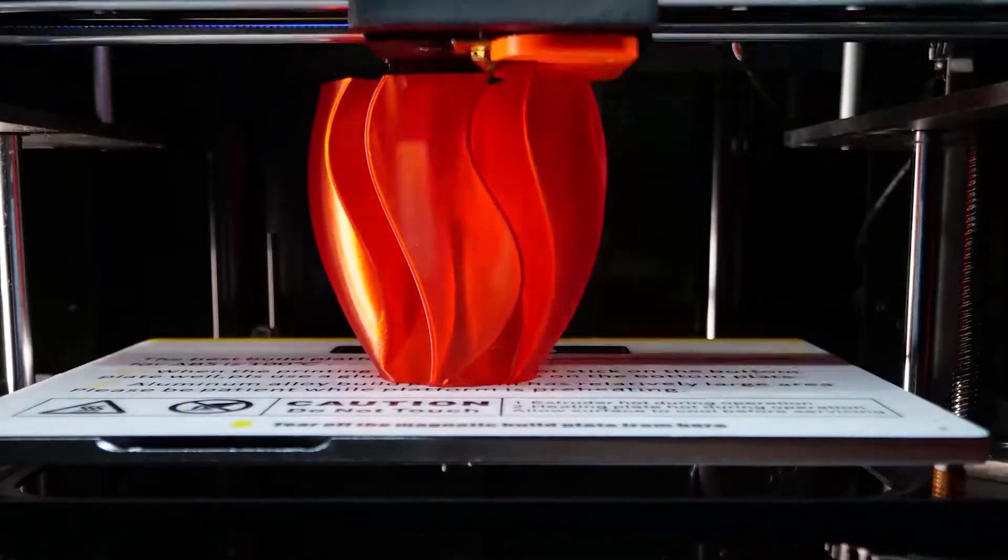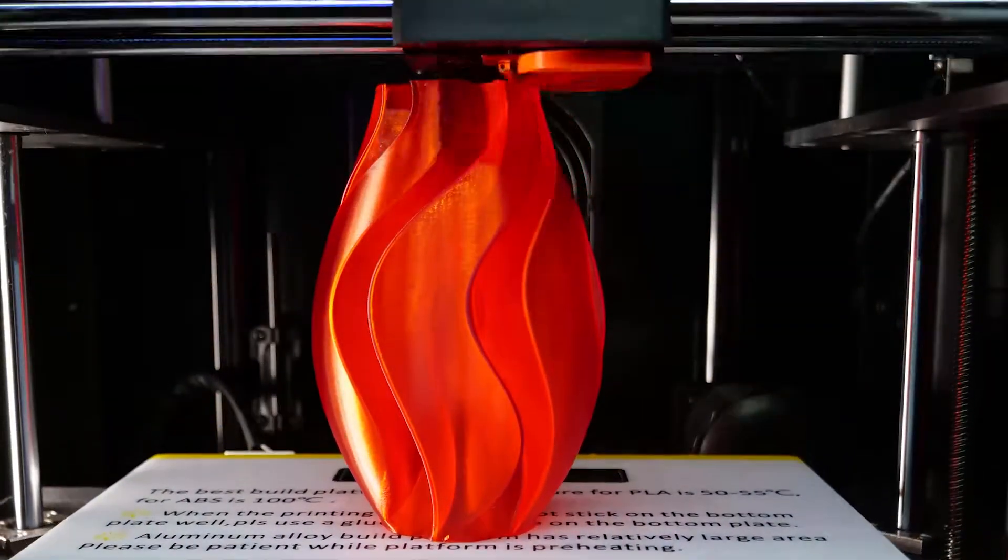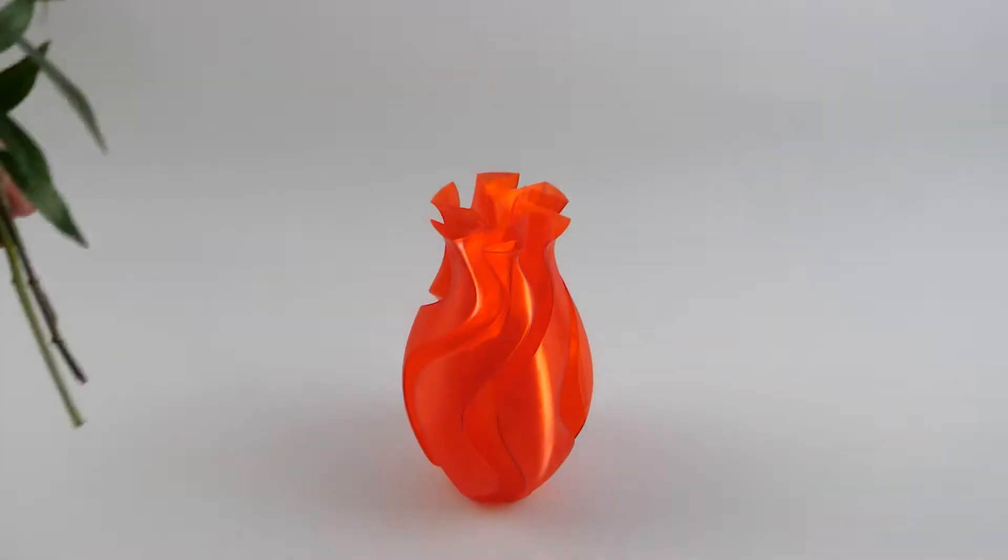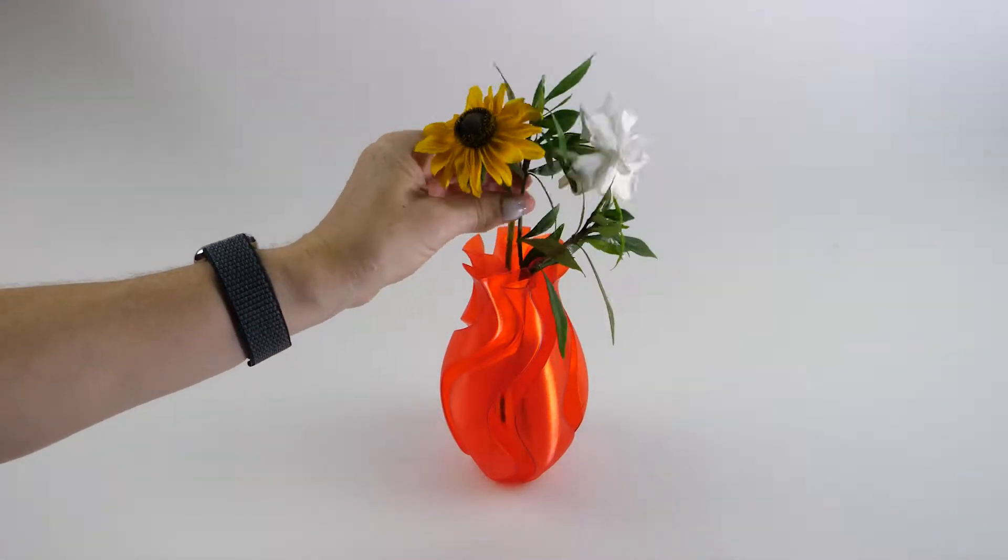This is a one millimeter nozzle printing this model called Test Face, and it is watertight when it's done. Look at this filament - it's kind of orange here and it's kind of red. I really like how it shimmers.